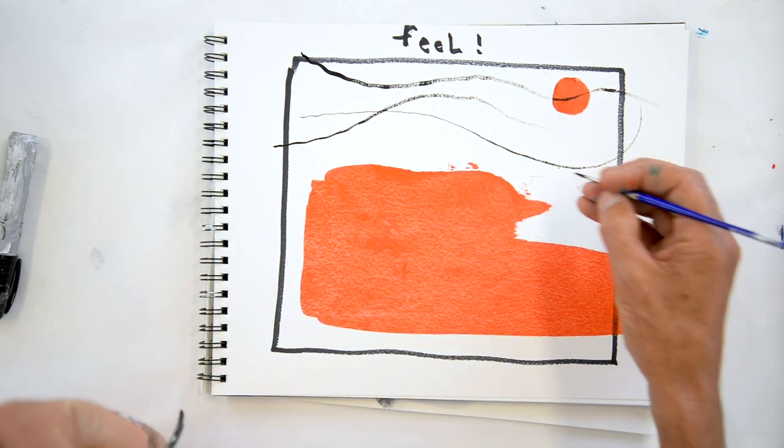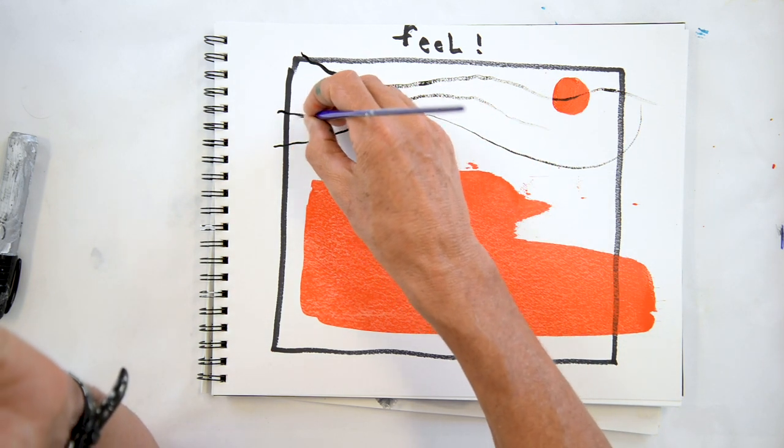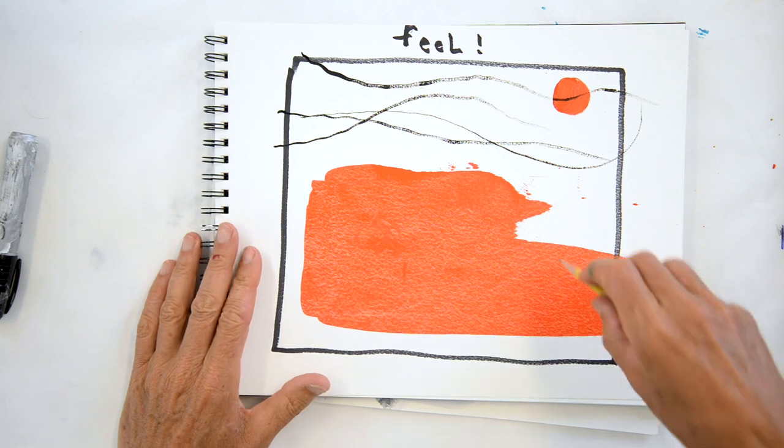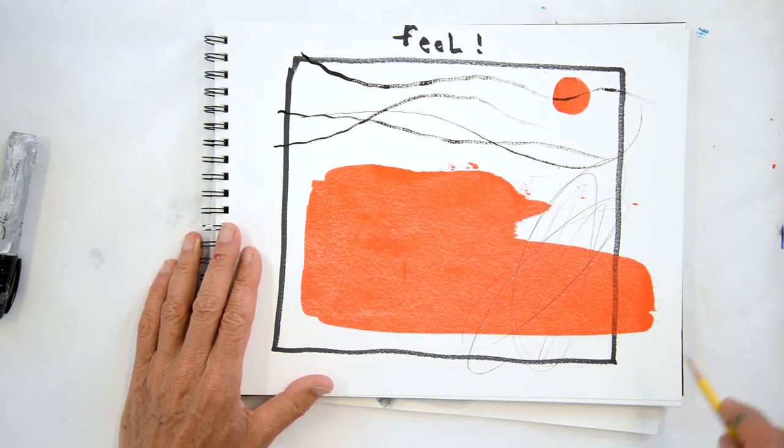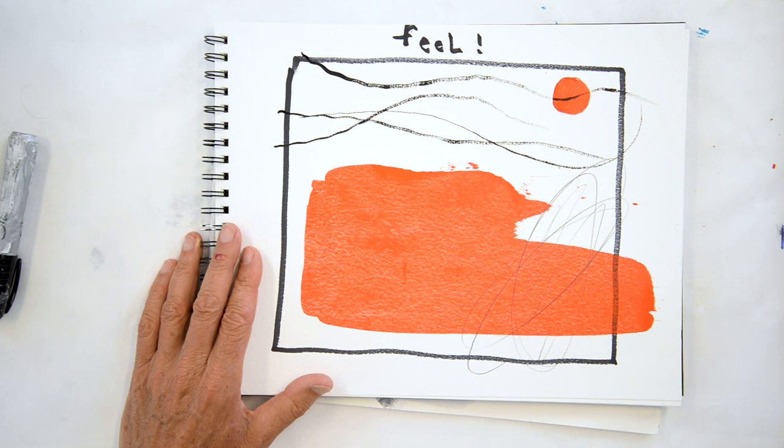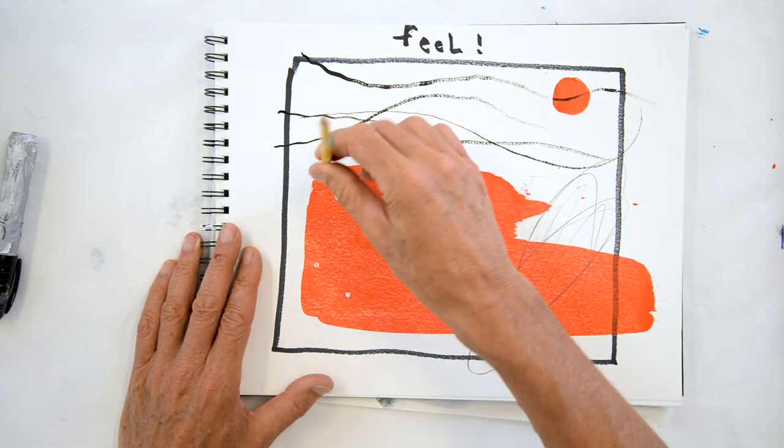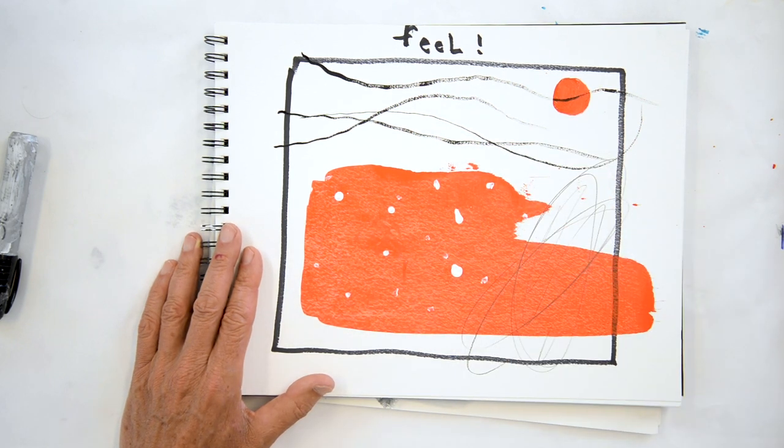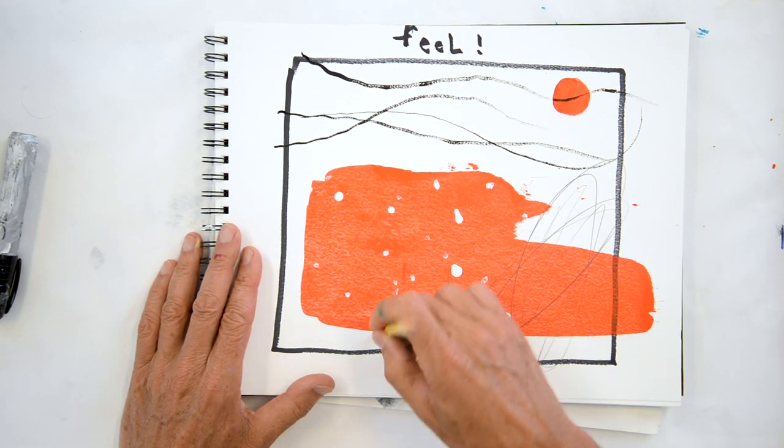And I can still make it feel spacious and free, right? I can just scribble freely and it seems to work. I can come in with dots and close my eyes and just go everywhere with these dots.